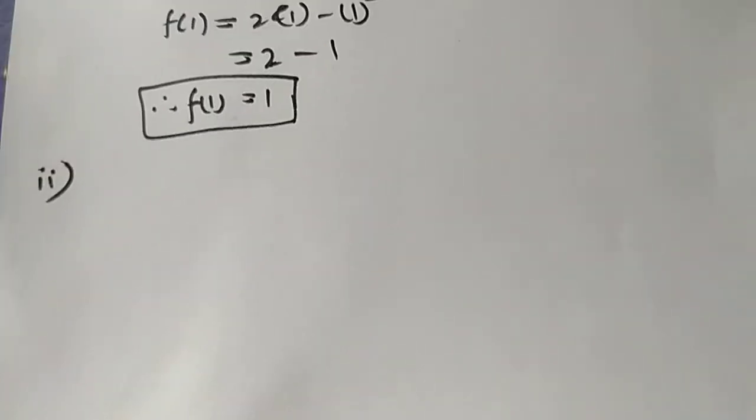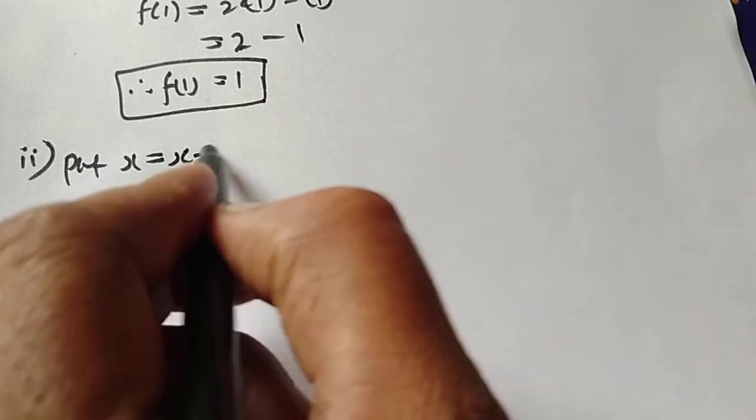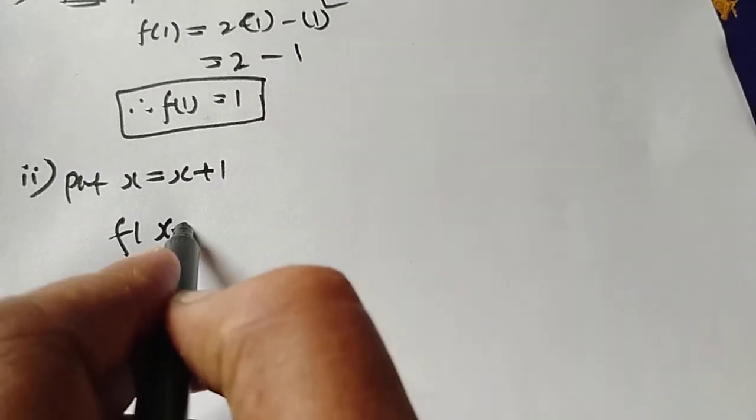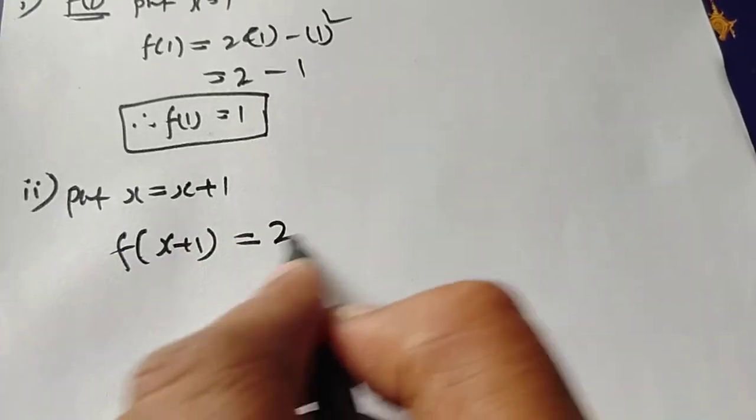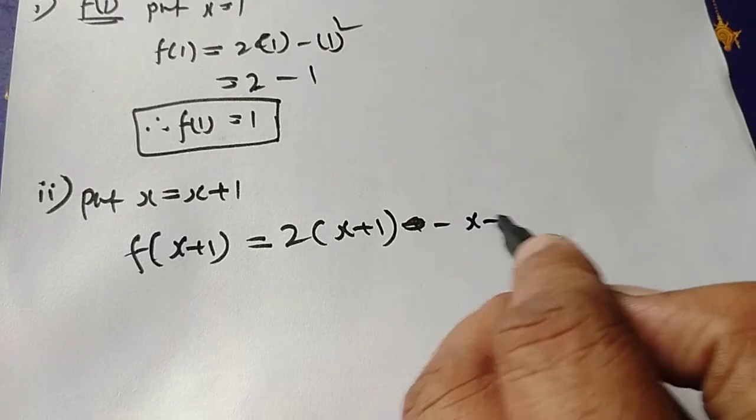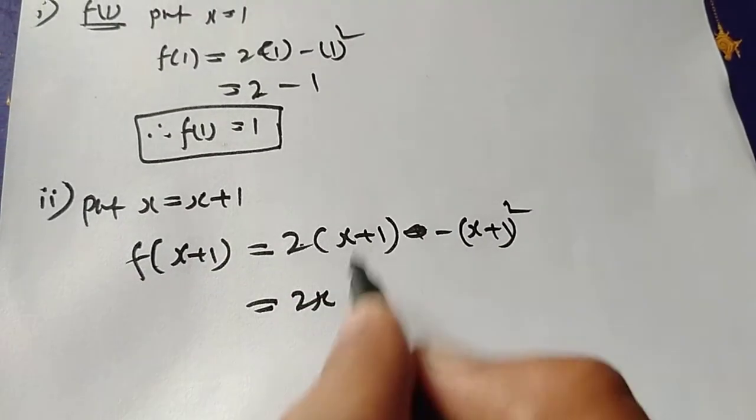Second condition, f of x plus 1, put x equal to x plus 1 in the given equation. So f of x plus 1 equal to 2 into x plus 1 minus x plus 1 all square. For 2 into x, 2x, 2 into 1 is 2.